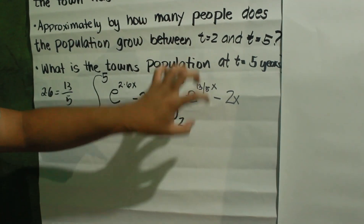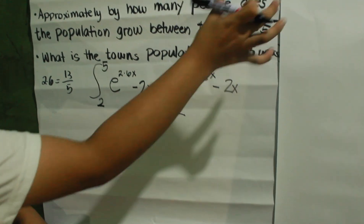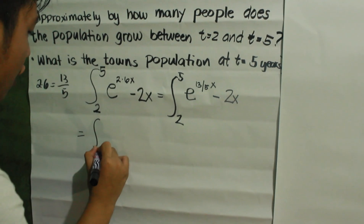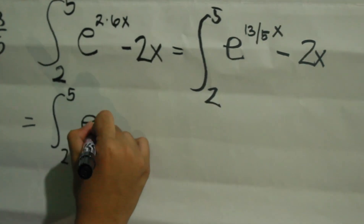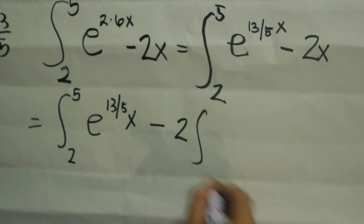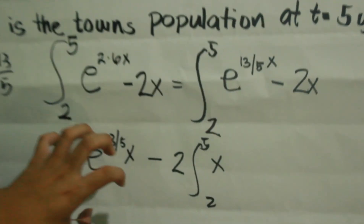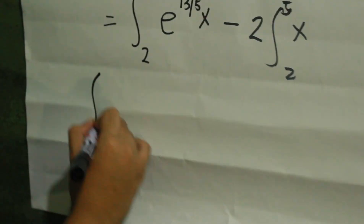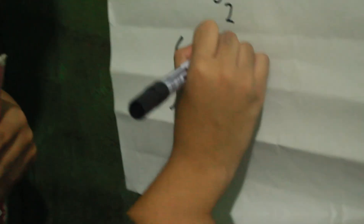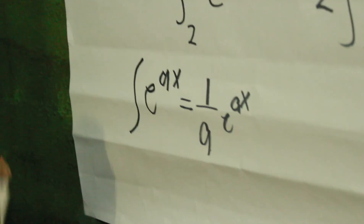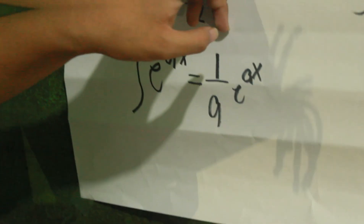So we have e raised to 13 over 5 x minus 2x. Now that we have it in fraction form, we are going to integrate this equation. The integration splits into two parts: the integral from 2 to 5 of e raised to 13 over 5 x, minus the integral from 2 to 5 of 2x. To integrate e raised to 13 over 5 x, we use the guide: the integral of e raised to ax equals 1 over a times e raised to ax.